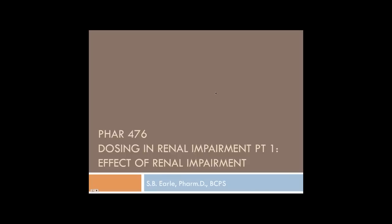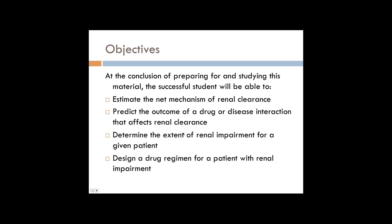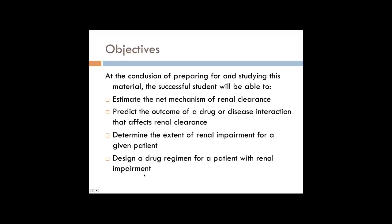Welcome. This is part one of dosing and renal impairment. The objectives are to remind you of the net mechanisms of renal clearance — whether something is predominantly secreted or predominantly reabsorbed by the kidneys when a drug is cleared by the kidneys. We're also going to predict the outcome of a drug or disease interaction if we acidify or alkalinize the urine. Then we're going to talk about dosing adjustment — making sure you understand dosing adjustment when a patient has renal impairment. That's really our major goal.